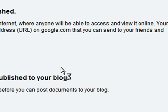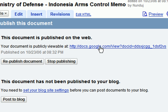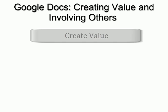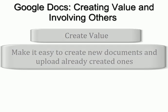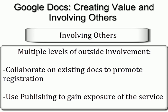For collaborators, Docs encourages users to sign up for the service. For people only casually interested in the service, coming upon a published document gives them a good, low-impact way to learn about the service. Google Docs is a great case study on the ways to move users along the behavior chain. The service makes it simple and easy to create value by making it easy to create documents or upload already existing documents. And the service is built around the next step of the behavior chain — involving others. By making it easy to both collaborate and publish, Docs is a great example of how to expand the scope of one's product beyond the registered user base.